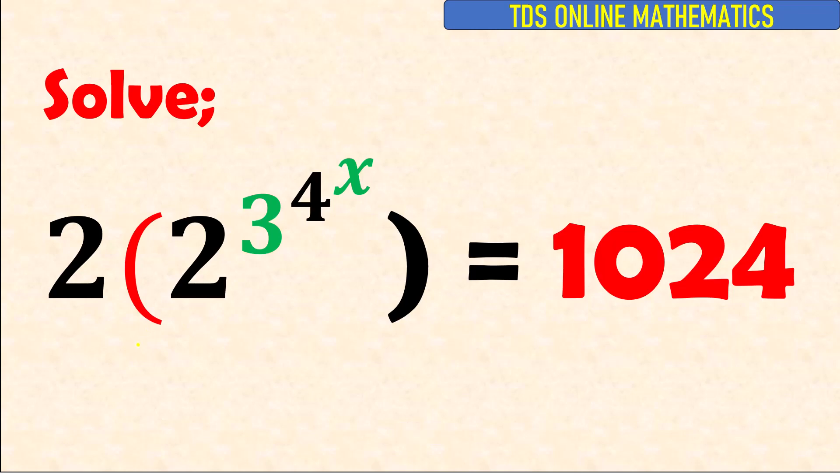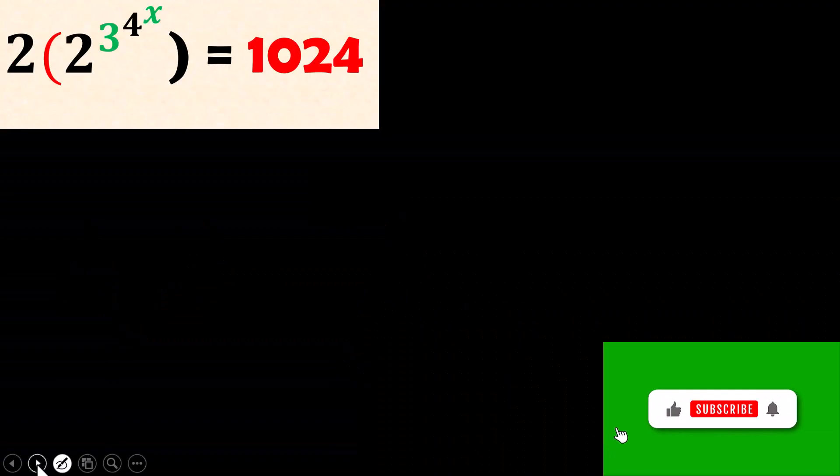Welcome back to TDS Online Maths. Let's solve this question together. We have 2(2^(3^(4x))) = 1024. So let's solve it together. The first thing to do is to remove the coefficient.